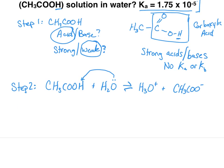I also, in this step, need to find the Ka for this reaction. And in this reaction, the Ka is 1.75 times 10 to the minus 5. That's given to us in the problem.